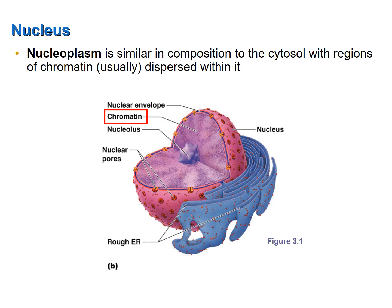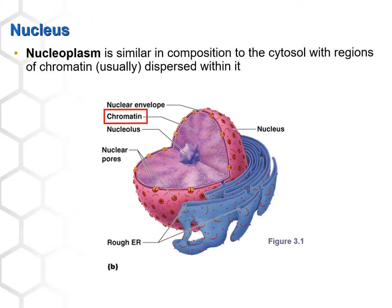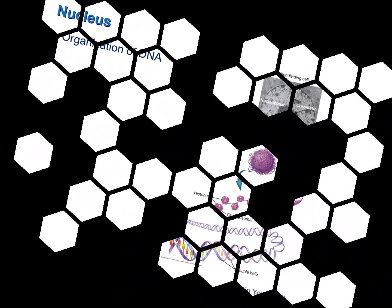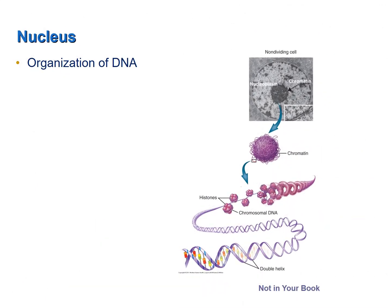Filling the interior of the nucleus is the nucleoplasm, which is very similar in composition to the cytosol, with regions of chromatin usually dispersed within. Chromatin is the form in which DNA exists in a non-dividing cell, and since cells spend most of their life cycle not dividing, DNA is usually in the form of chromatin.